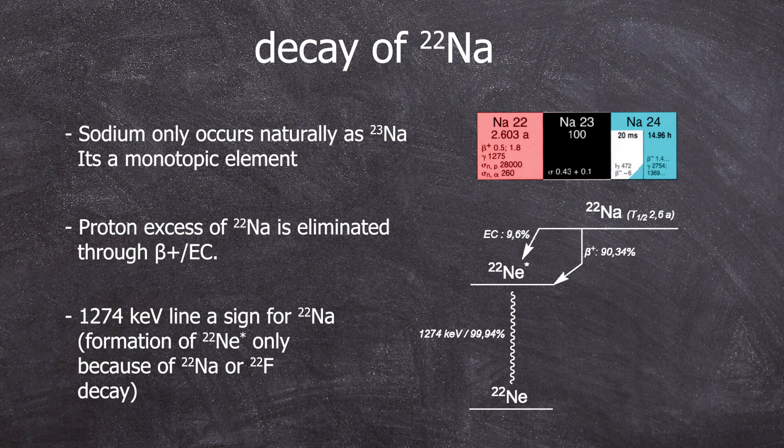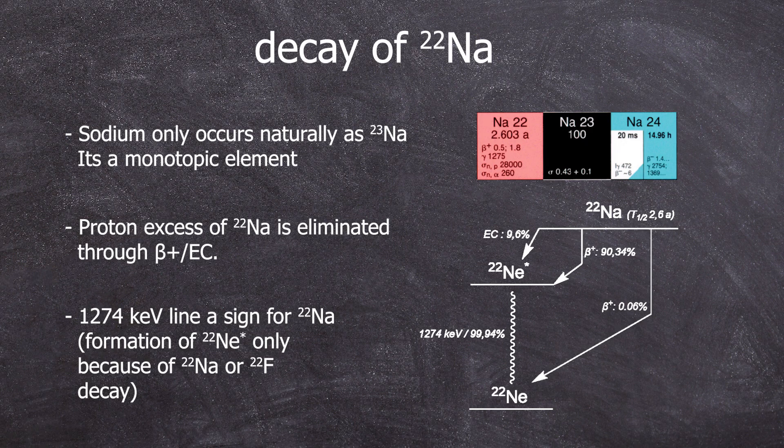The probability of this high-energy gamma ray is 99.94%, so there is a 0.06% chance for that beta-plus decay to directly go into the ground state of neon-22. This 1,274 keV line should be visible in the gamma spectrum.